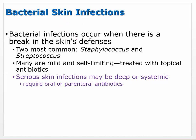Bacterial skin infections occur when there's a break in the skin's defenses. Usually we're able to keep bacteria out because of pH differences, and the skin is pretty good at keeping things away — it's usually pretty dry. Two of the most common are Staphylococcus and Streptococcus. Many are mild and self-limiting and can be treated with just topical antibiotics, but they can become serious — deep and systemic — and may require oral or even parenteral IV antibiotics.